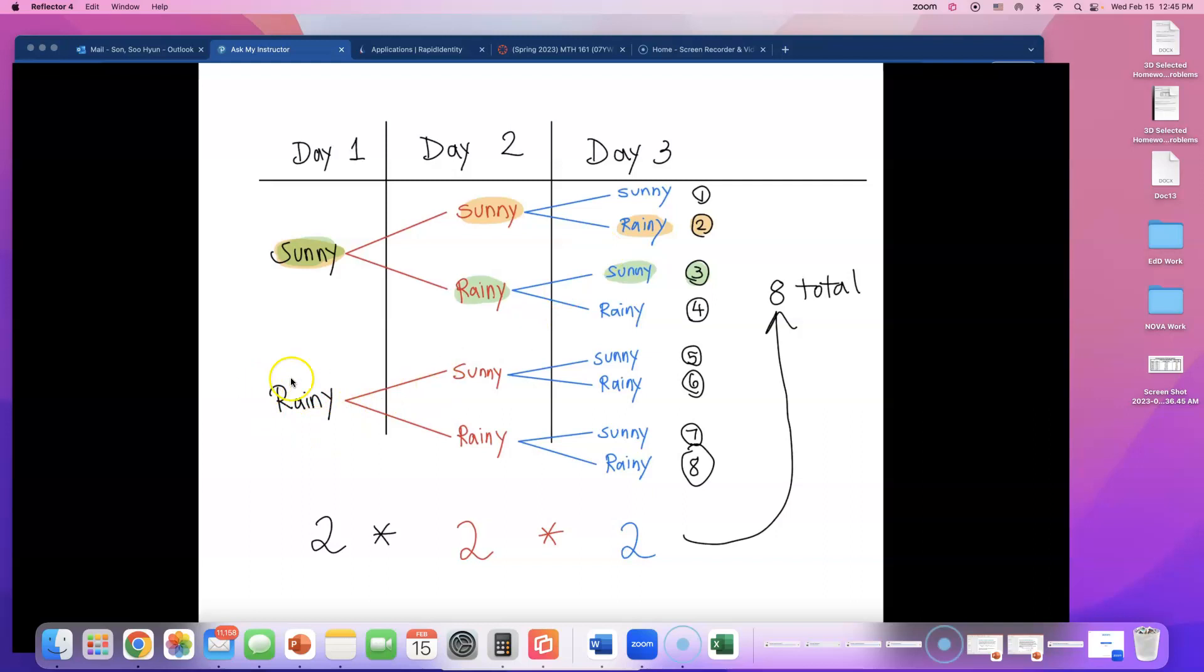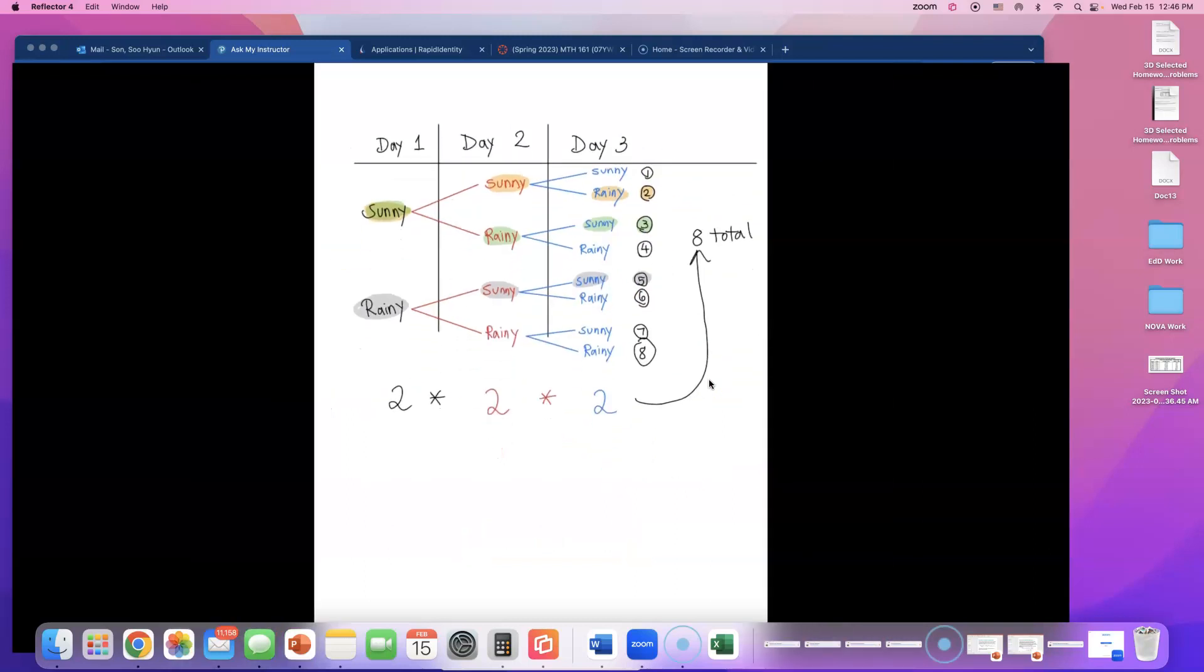Let's go down here. Let's say that you started with the rainy day. Then you can have a sunny day. But we are only allowed to have one rainy day, so day three has to be sunny. That is another option. Can I have rainy days and another rainy days? No, because they said only one rainy day. So how many are highlighted here? Three. That's why the answer is going to be 3 out of 8.